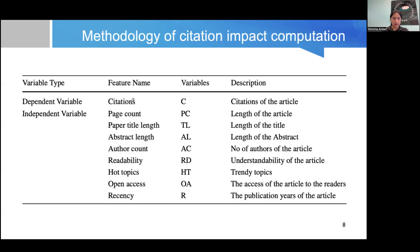This table shows the features used in the citation analysis. The received citations are the dependent variable. The independent variables of interest are: page count (PC), paper title length (TL), abstract length, author count, readability, hot topics, open access, and recency. Readability is about the presentation or structure of the paper, hot topics refers to trending topics, and recency is about whether it is a recent or older publication.